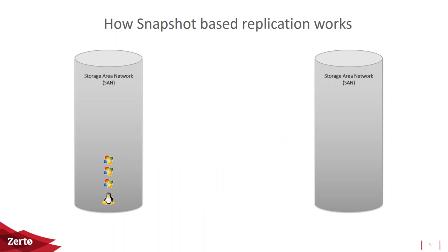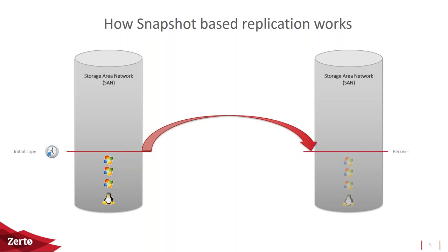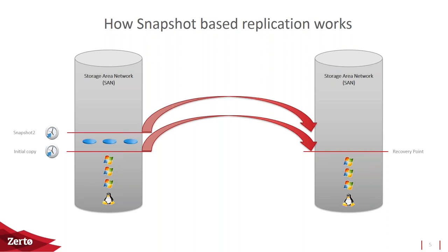Let's jump into snapshot-based replication. You're probably doing this today. You take an initial copy with storage-based replication to the other side, giving you your recovery point — a point-in-time picture of that data you can recover to a known good state. A hundred percent of that data is on both sides. Then all the delta changes are captured and monitored on disk, so when the next replication schedule runs — every one hour or four hours — you take the next snapshot and send only those delta copies to the other side.